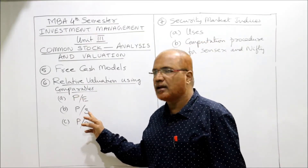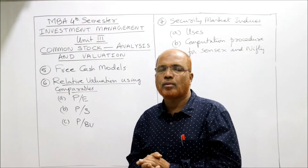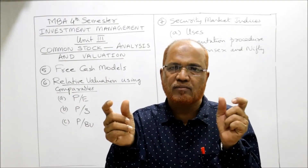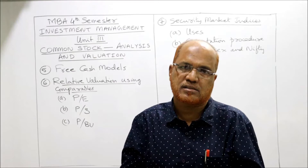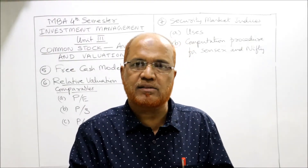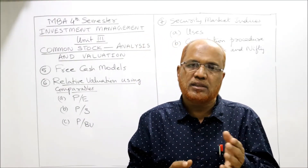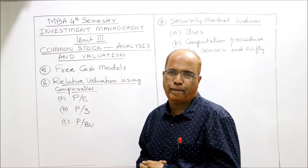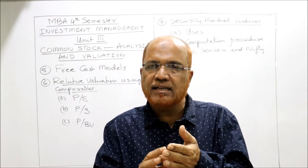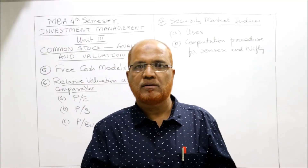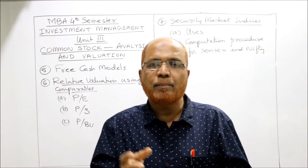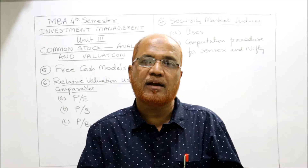The next comparable is Price by Sales (P/S). Here P stands for market capitalization, which is calculated by multiplying the market price per share by the total number of shares. This market capitalization is divided by the total sales revenue for one year to get the P/S ratio. We calculate the average P/S ratio of the past few years and multiply it by the current year's total sales revenue.